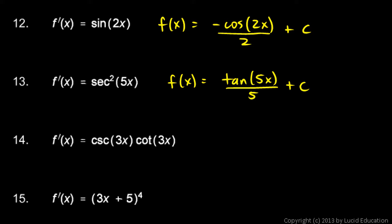What function has cosecant cotangent as its derivative? Well, the cosecant function has negative cosecant cotangent as its derivative. So, if we take the negative cosecant function, negative cosecant, and let's make that cosecant of 3x, negative cosecant 3x.